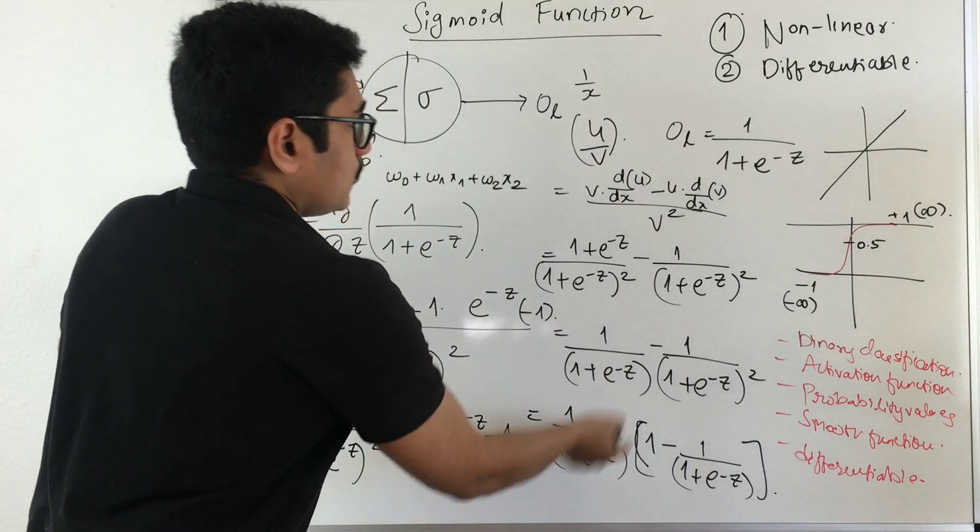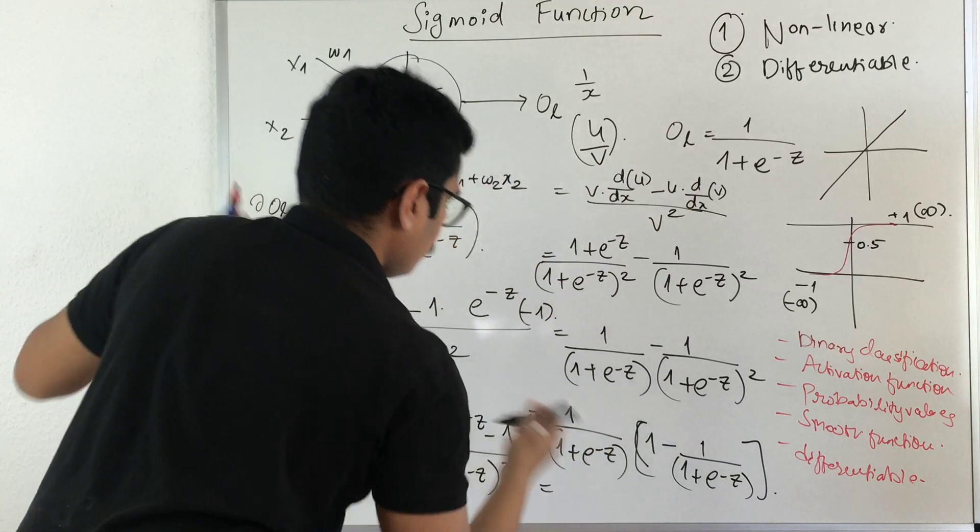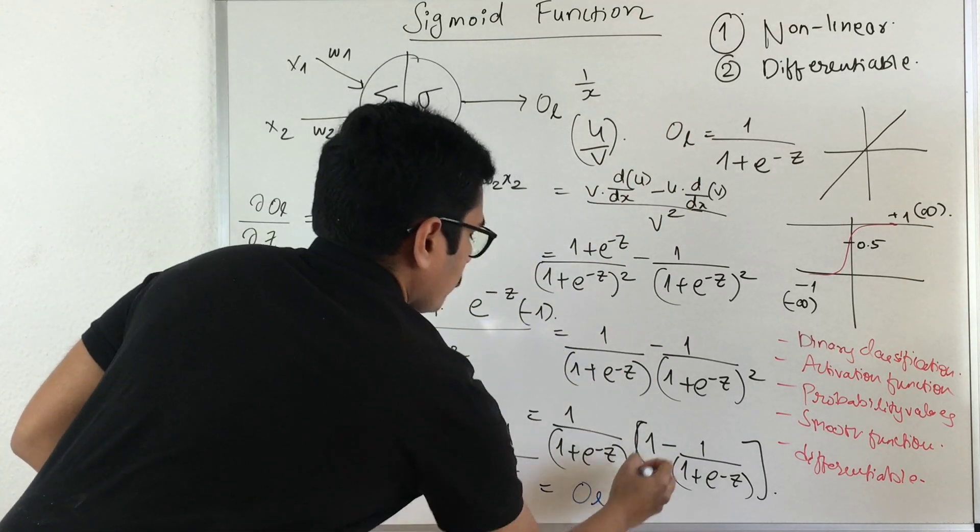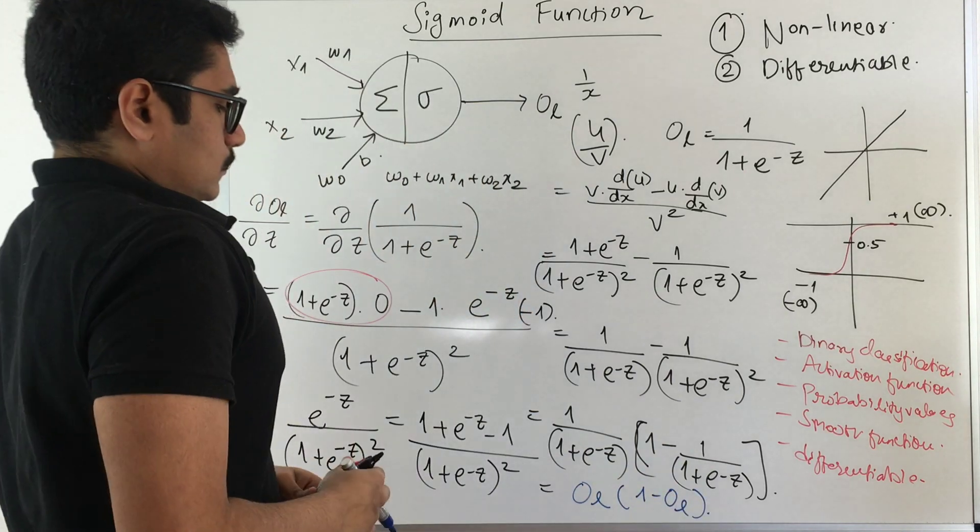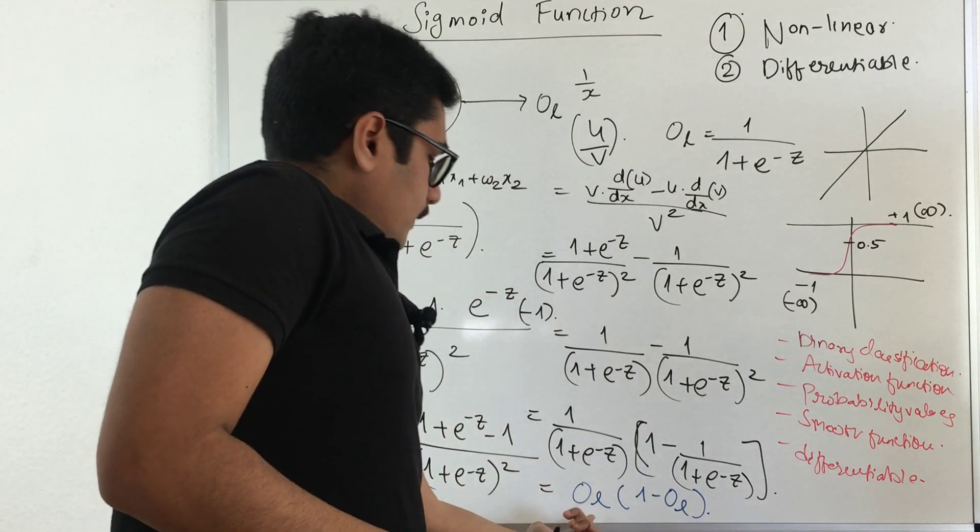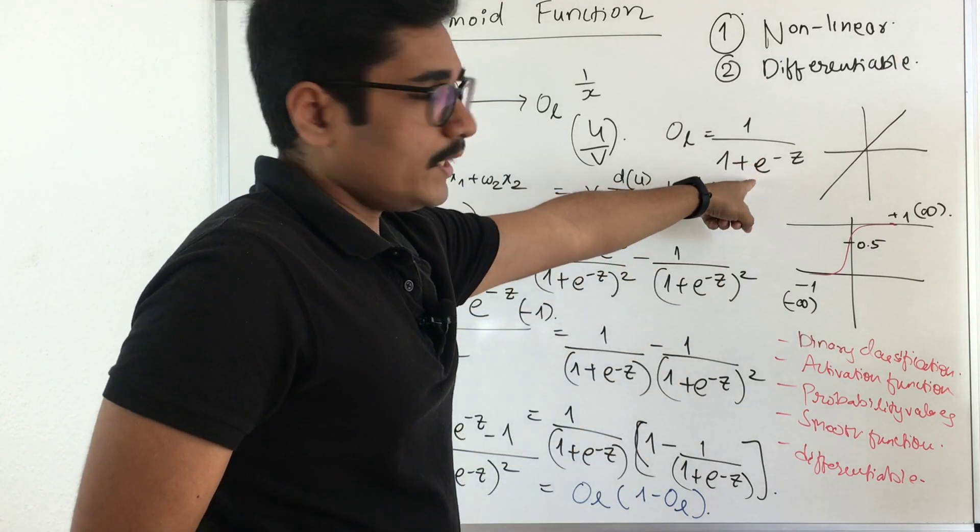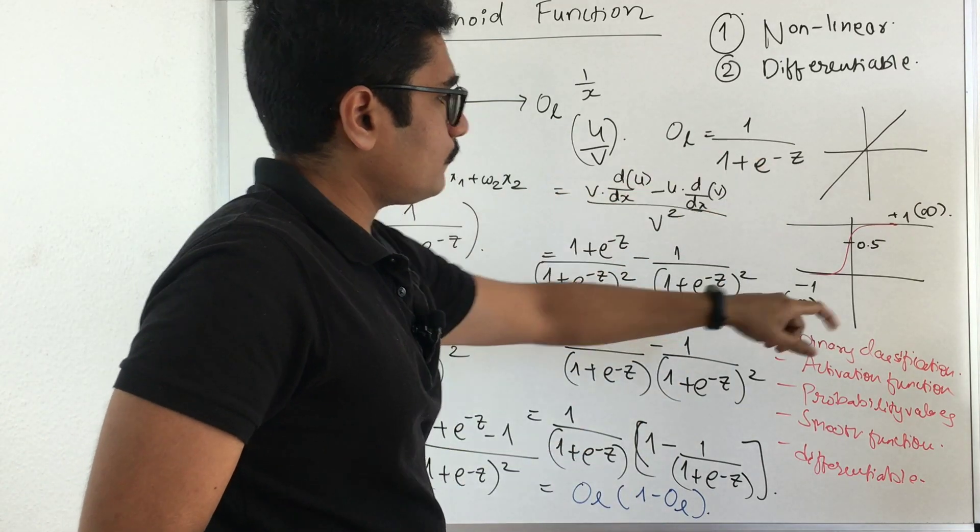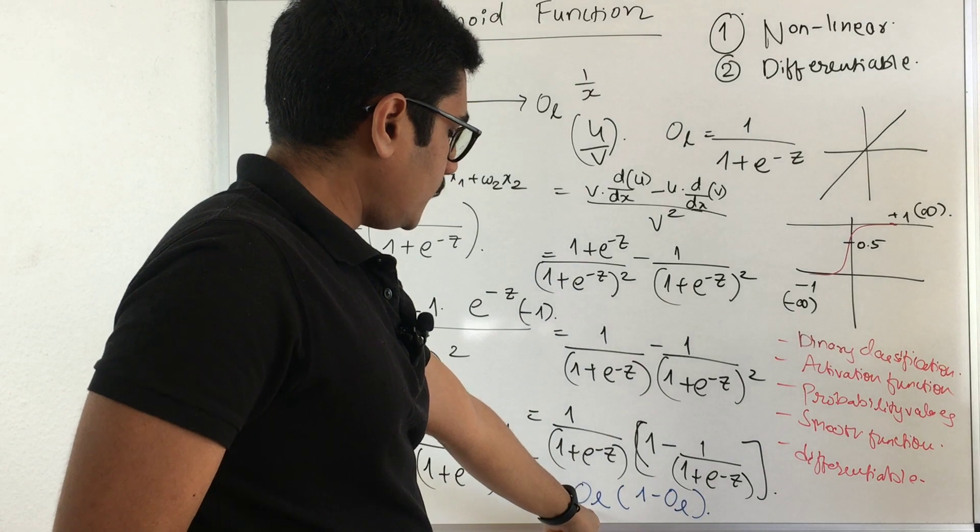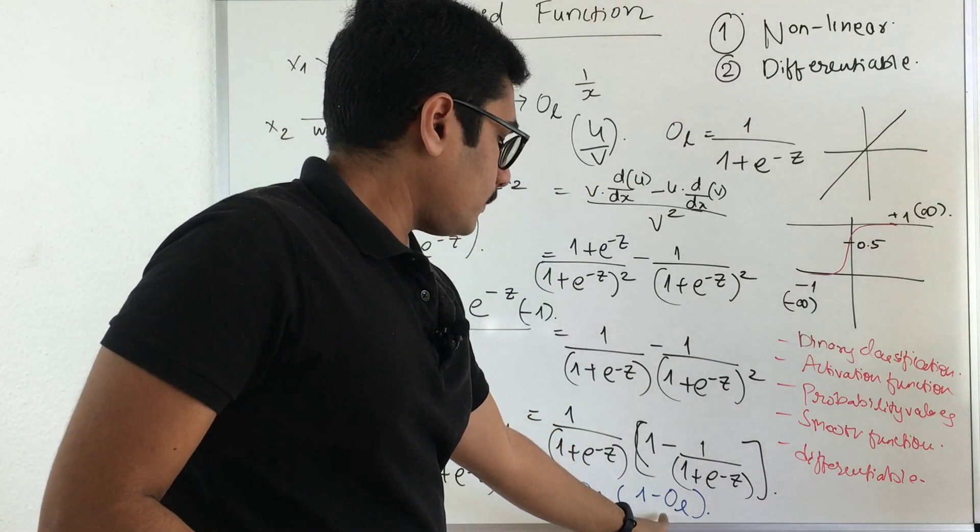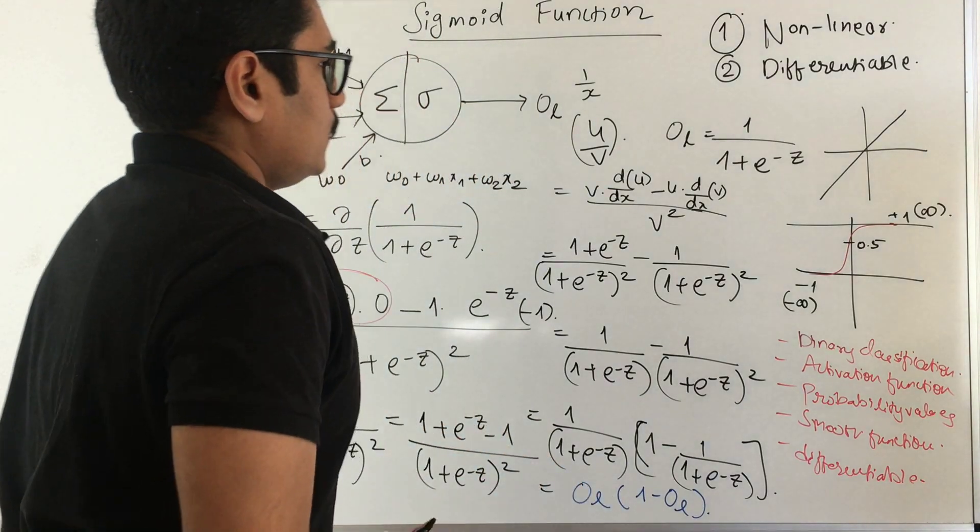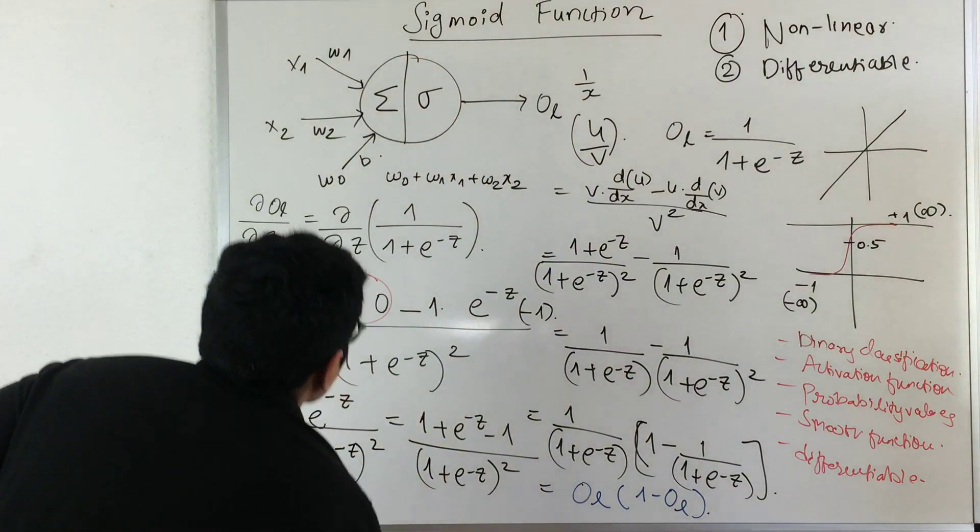This is nothing but our output. We have ol, and in the bracket you have 1 - ol. If you take the derivative of your sigmoid function—that S-shaped curve—you obtain the output as output times (1 - output). How do you mathematically interpret this? That's also essential to know.